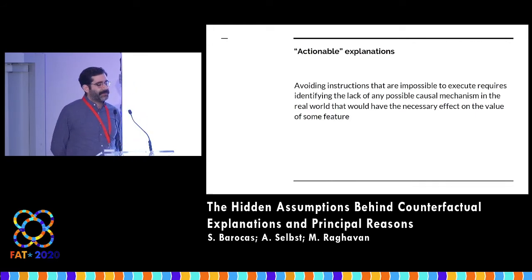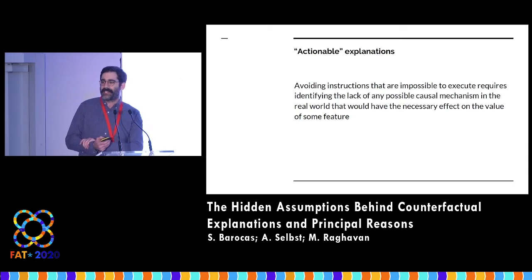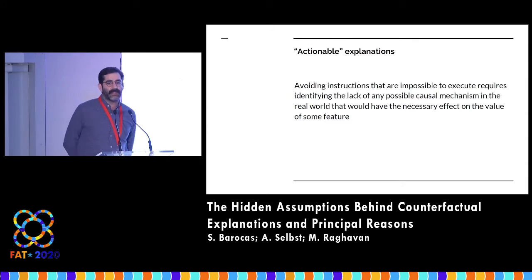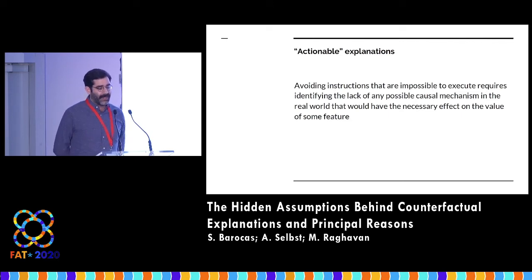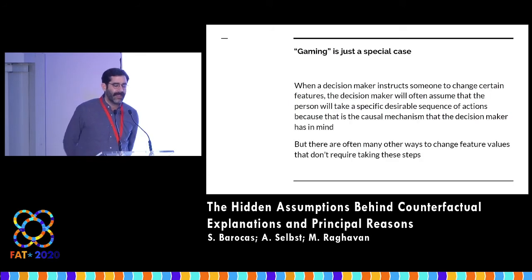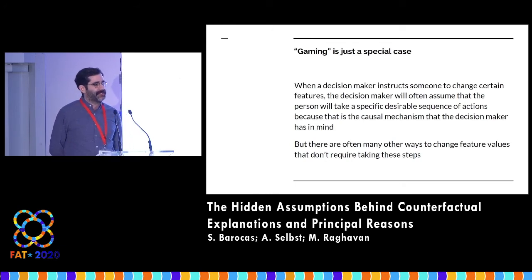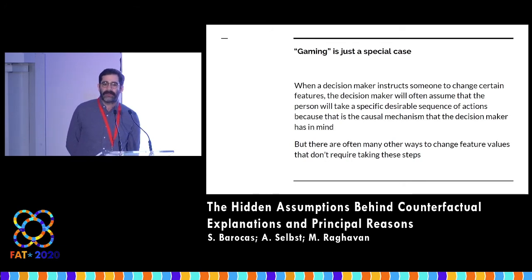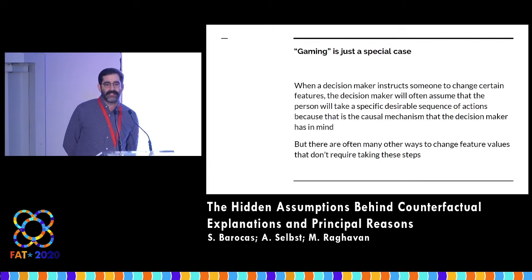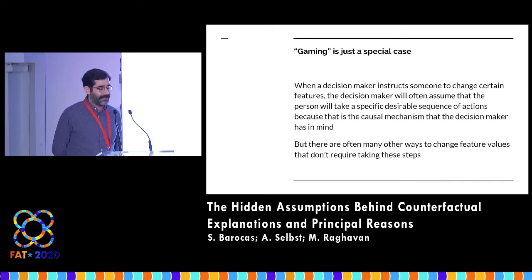It may well be that when people are trying to tell us that we should be giving actual explanations — which is actually a lovely paper from last year — what they're really trying to tell us is that we should only instruct people to do things for which there is something causally plausible in the real world for them to do. But this requires actually thinking extremely carefully about what mechanisms exist, what actions are actually possible. And in some sense, gaming is even just a special case of this exact problem — when we worry about gaming, what we're worried about is that there might be some action the decision maker hasn't even thought about that would allow you to change the features in the instructed way, but with a set of actions that are not what you expect.